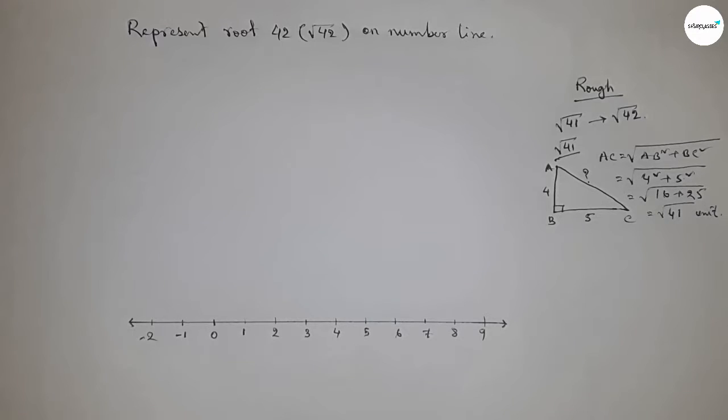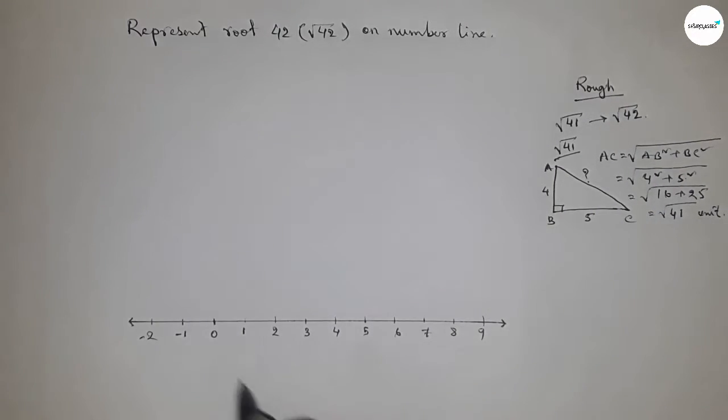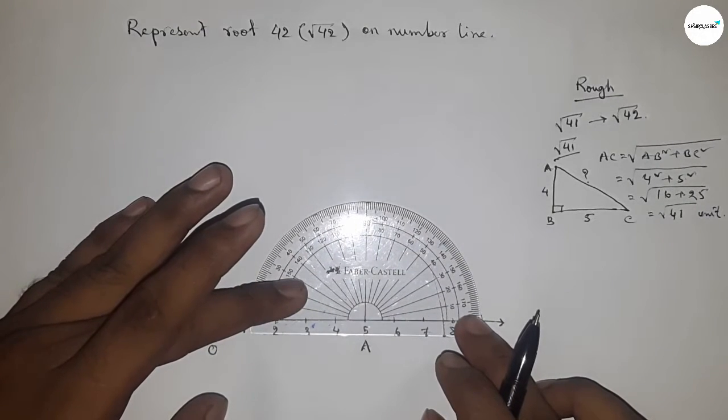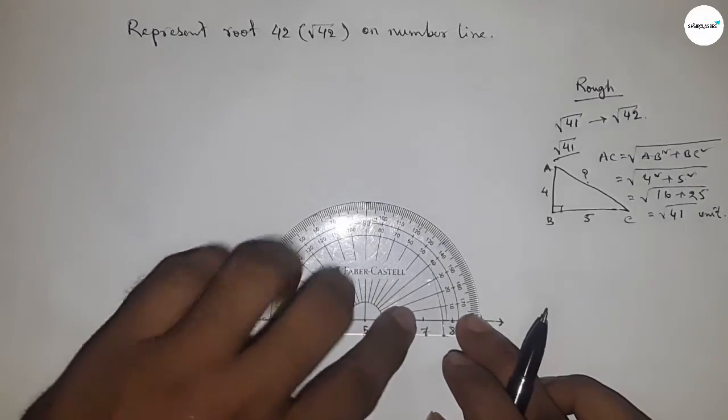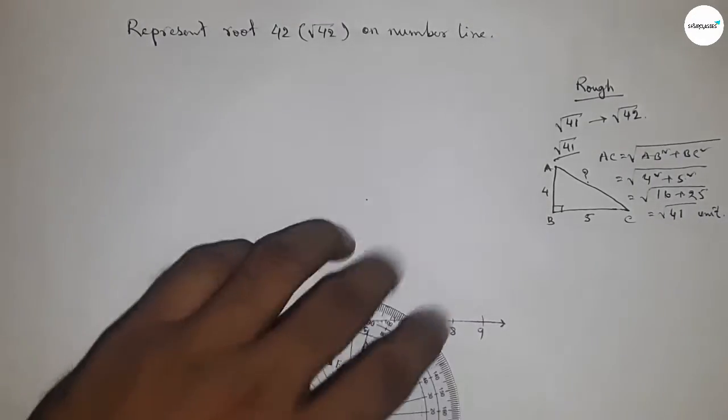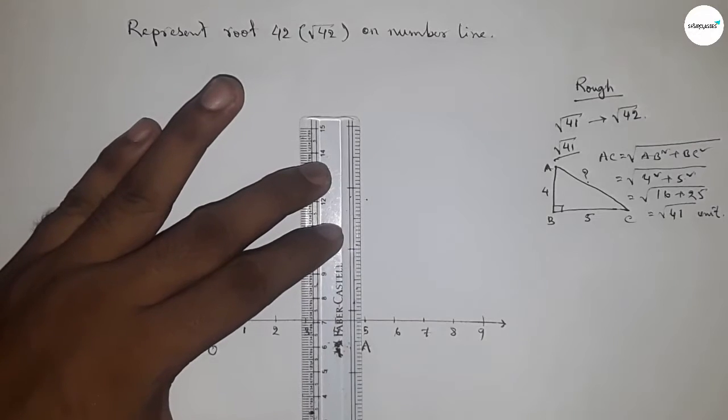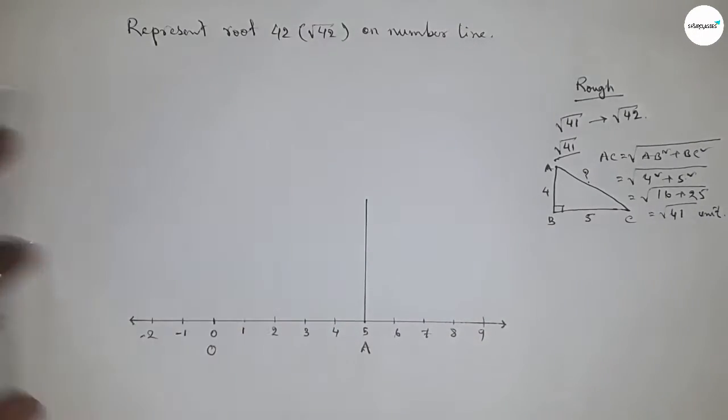So taking O point and this is A point. First, drawing a 90 degree angle on the point A by using protractor. Okay. Now joining this to get a perpendicular line.